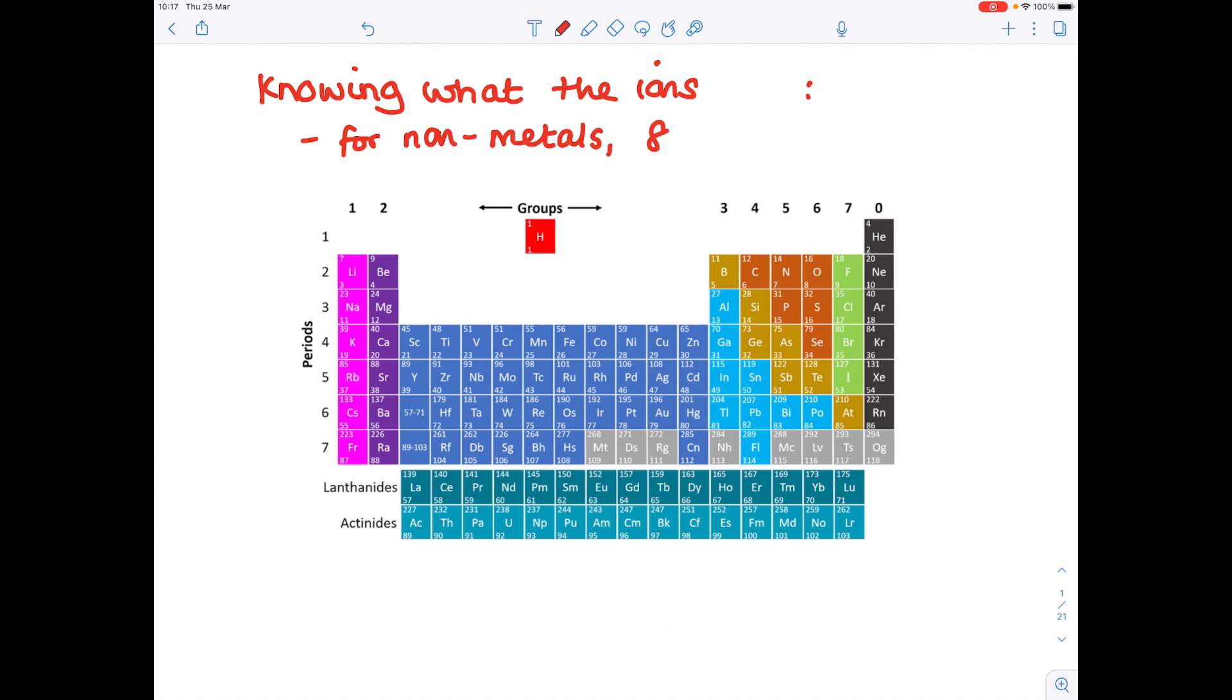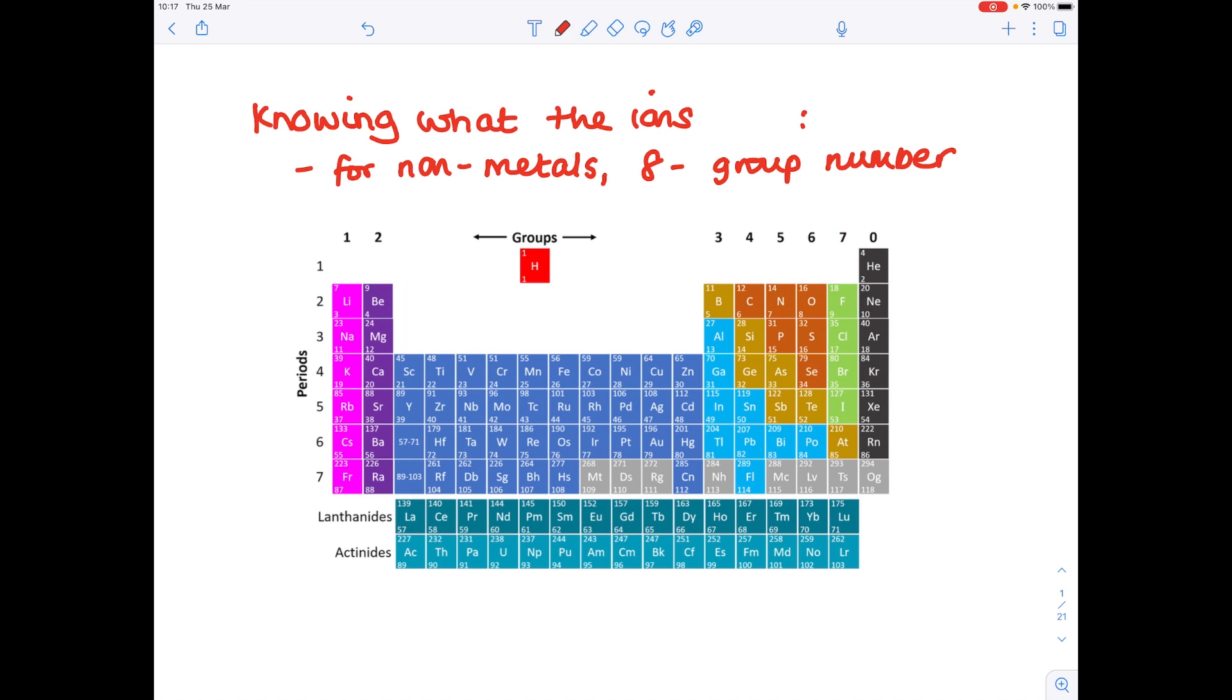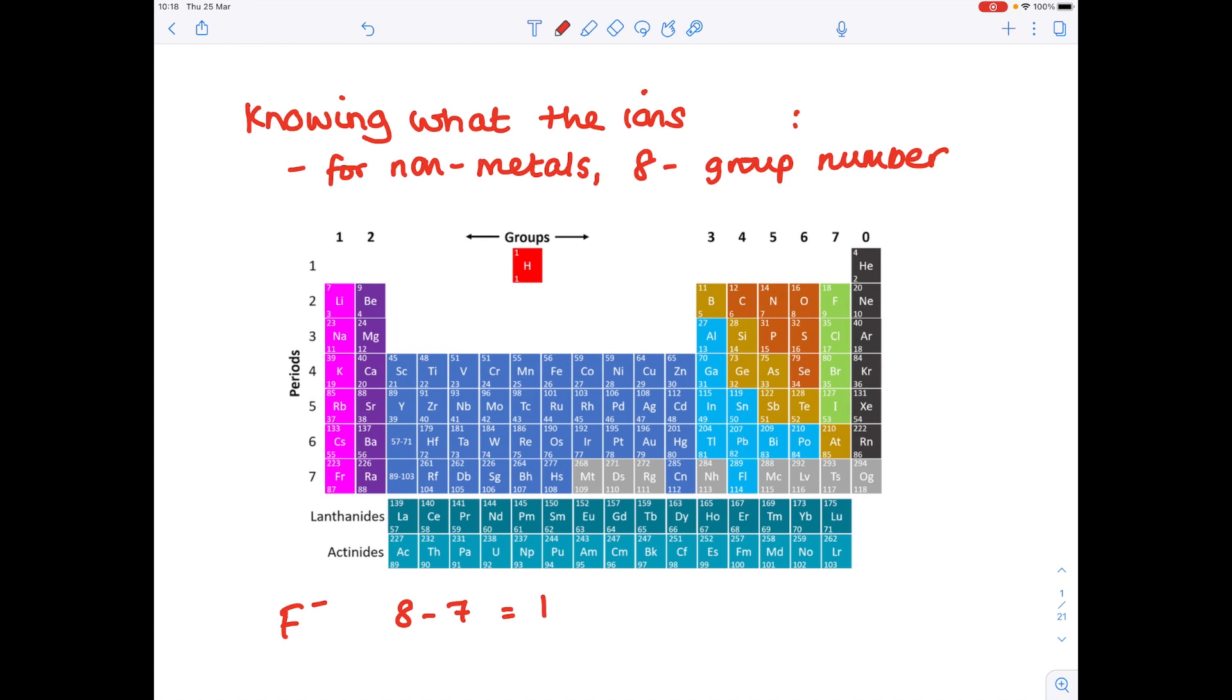Now for non-metals, you have to do 8 minus the group number. For example, fluorine is in group 7, so you do 8 minus 7 to get 1. So therefore the charge, and it's always a negative with the non-metals, is -1. Oxygen here is in group 6, so therefore you do 8 minus 6 equals 2, so its charge is 2-. Nitrogen is in group 5, so you do 8 minus 5 equals 3 to get 3-. And that's how you work out the charges on those non-metal ions.